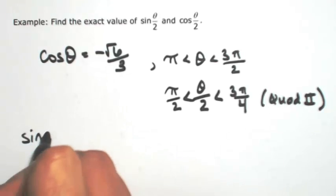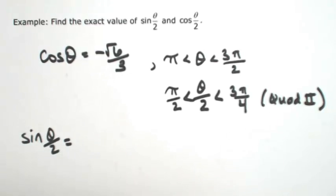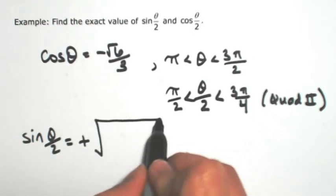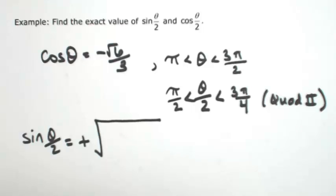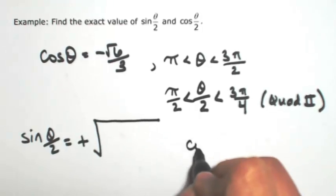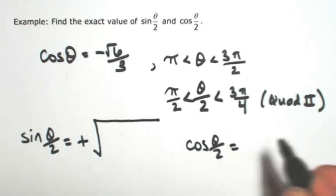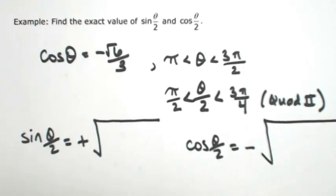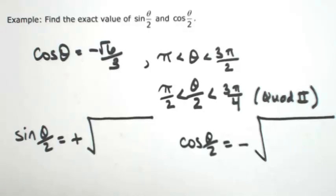Okay, so that means that the sine of theta over 2, because you're in the second quadrant, is going to be a positive square root. And then the cosine of theta over 2, because you're in the second quadrant, cosine is going to be negative. So we always have to keep in mind where we are.